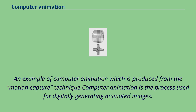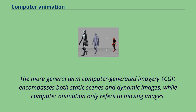An example of computer animation produced from the motion capture technique. Computer animation is the process used for digitally generating animated images. The more general term computer-generated imagery encompasses both static scenes and dynamic images, while computer animation only refers to moving images.